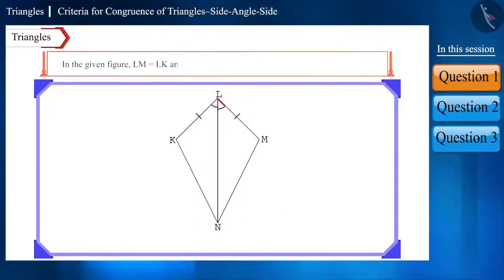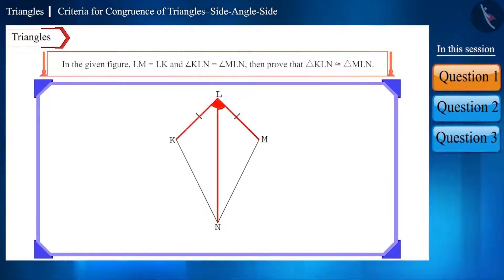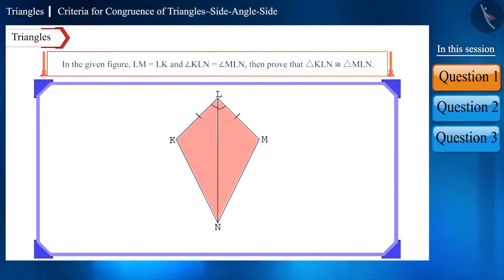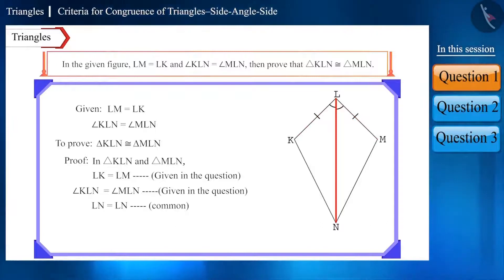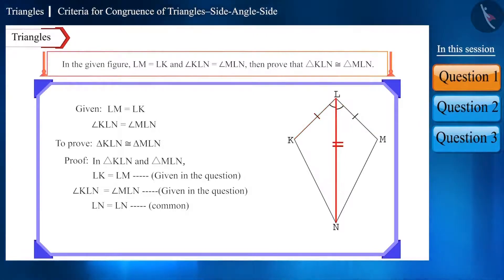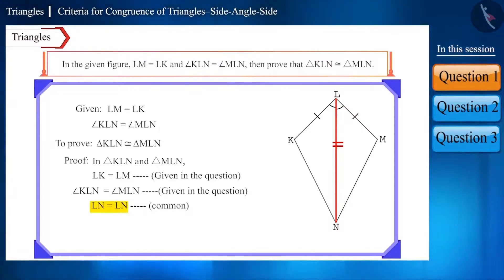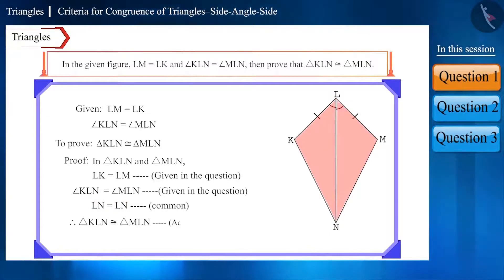In the given figure, side LM is equal to side LK and angle KLN is equal to angle MLN. Prove that triangle KLN is congruent to triangle MLN. If we look at the two triangles, their one side and one angle is equal. If you look at side LN, you will notice that it is the side in both triangles that comes in order after one congruent side and angle — that is, it forms the side-angle-side congruence rule. Since this side is the common side of the two triangles, it will be congruent. Therefore, triangle KLN is congruent to triangle MLN.